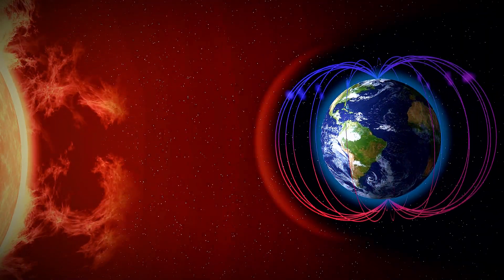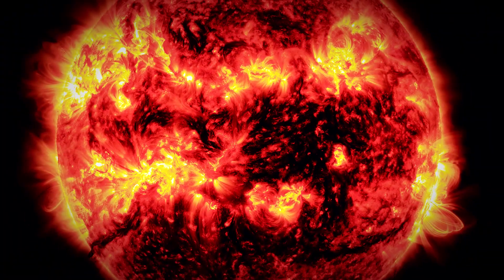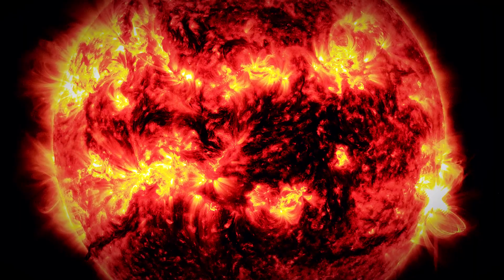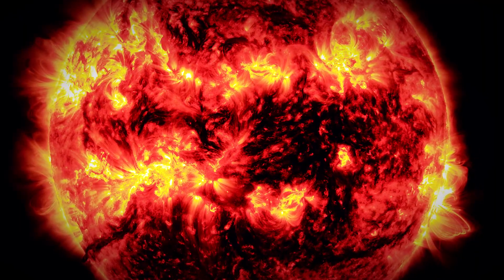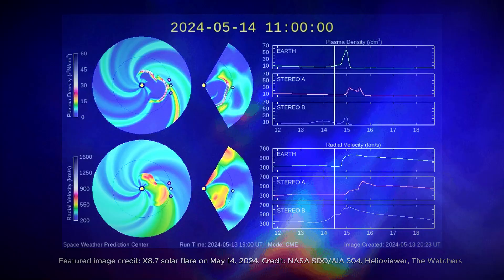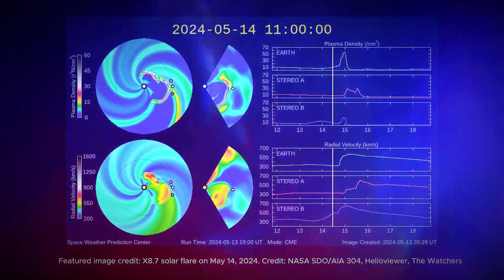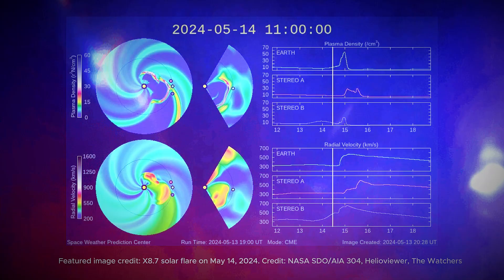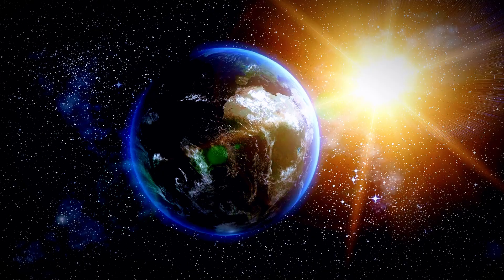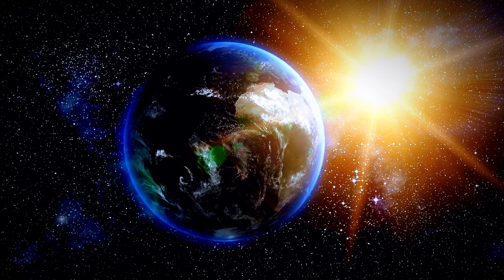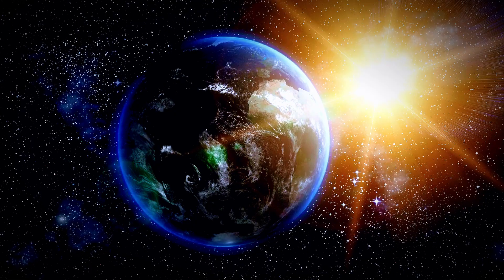This flare, which peaked at 12:51 p.m. Eastern Time, was accompanied by Type 2 and 4 radio emissions, indicating a strong coronal mass ejection, CME. However, due to the sunspot's position on the sun's western limb, the CME is not expected to be Earth-directed.